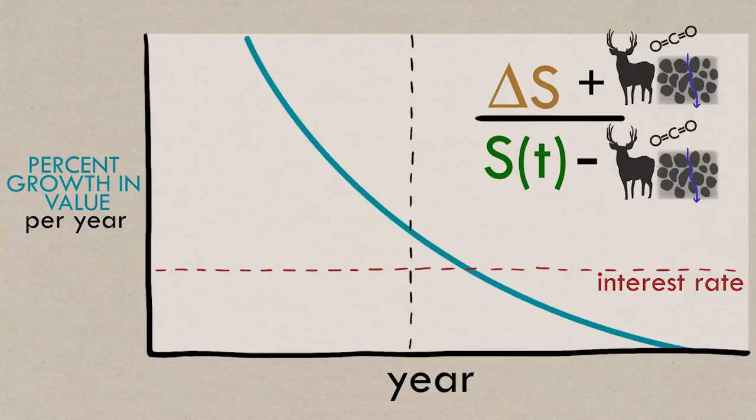Either way, it's making this whole term bigger, lengthening the optimal rotation age. Thinking about it in basic terms, if the forest is providing these other benefits, then letting it stand longer or even permanently would be better.